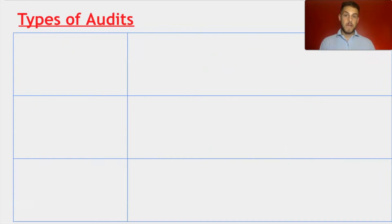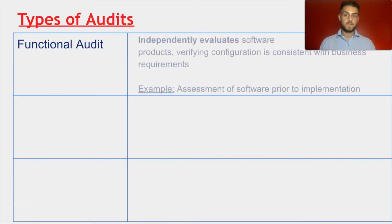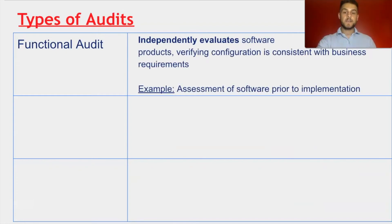Moving on to our last list of types of audits, we will start with a functional audit. A functional audit independently evaluates software products, verifying configuration is consistent with business requirements. An example of this would be an assessment of a software prior to implementation.